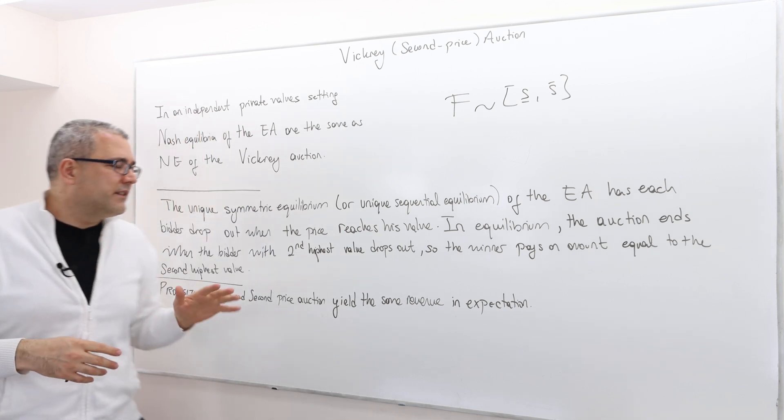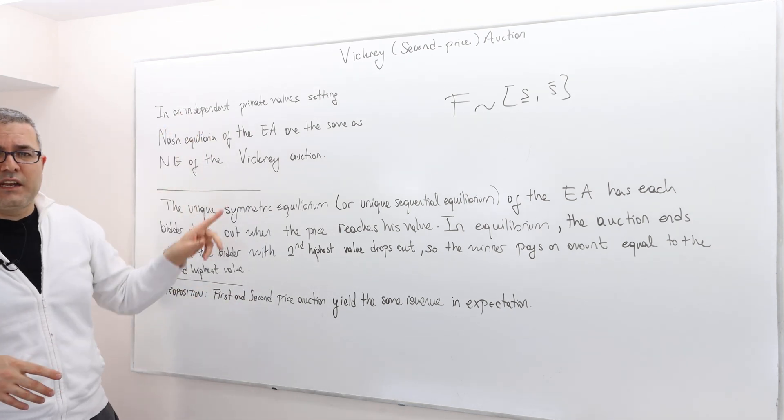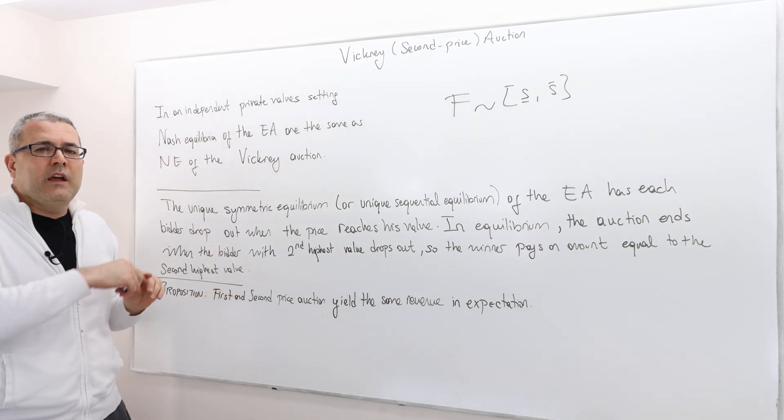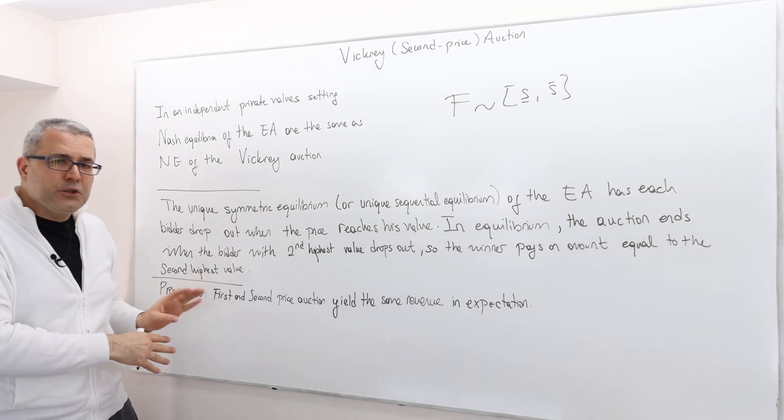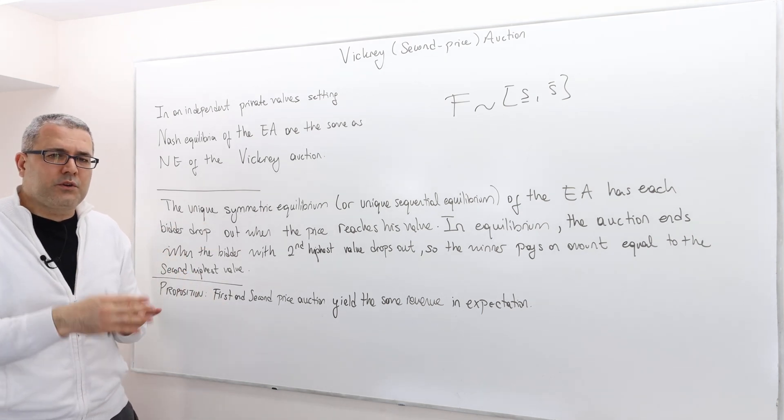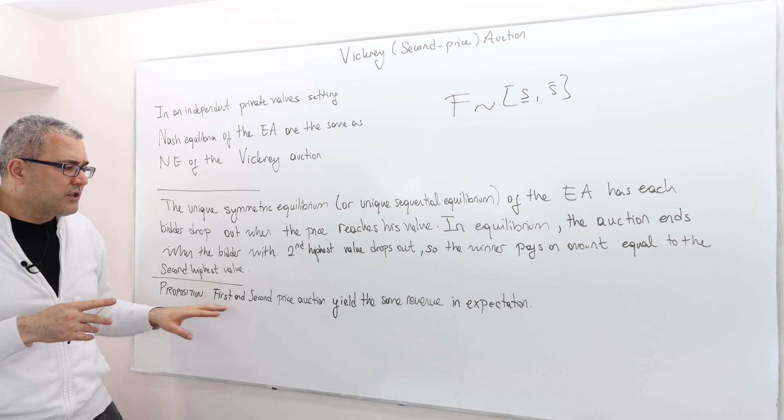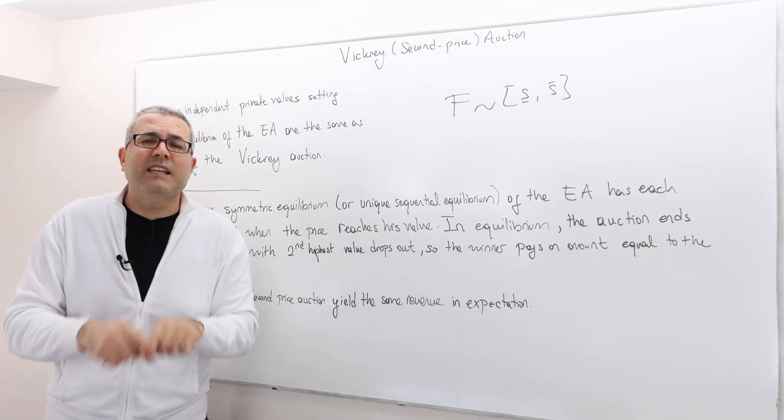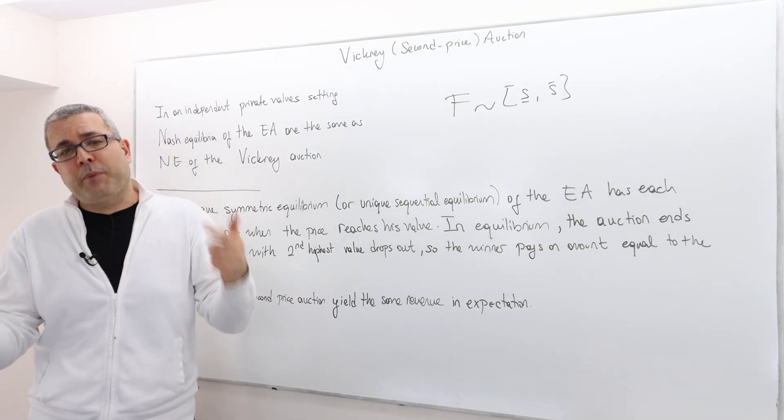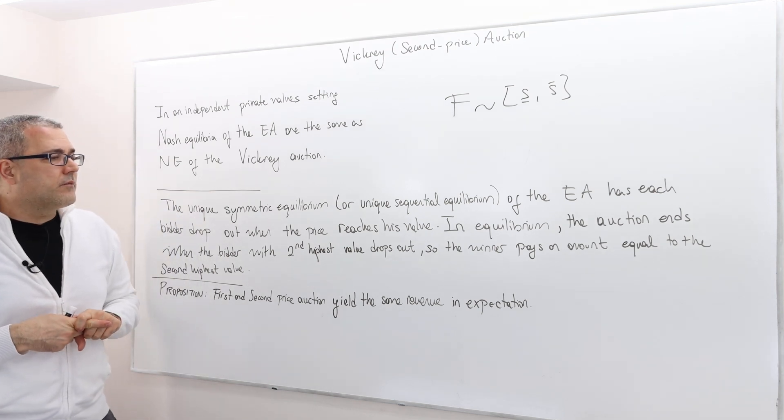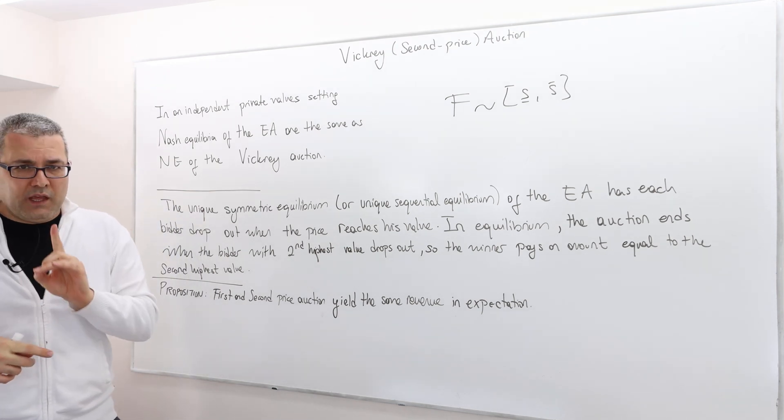But what about the revenues? Well, that theorem says in this setup, whether you sell this product with a first price auction or second price auction doesn't matter because they are going to yield the same revenue but in expected terms.